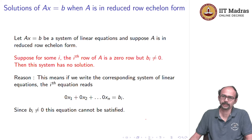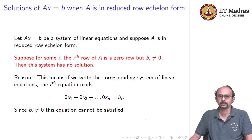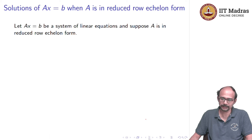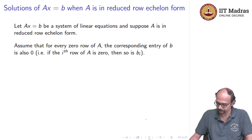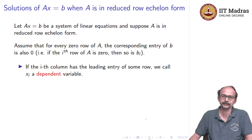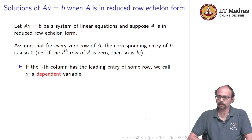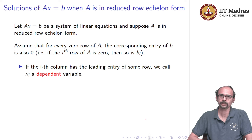Now let us look at the case where whenever A has zero rows the corresponding bi entries are also 0. Assume Ax = b with A in reduced row echelon form, and for every zero row of A the corresponding entry of b is also 0. We give names to variables: if the ith column contains the leading entry of some row, we call xi a dependent variable. In our first example, the leading entries were in columns 1 and 2, so x1 and x2 are dependent variables.